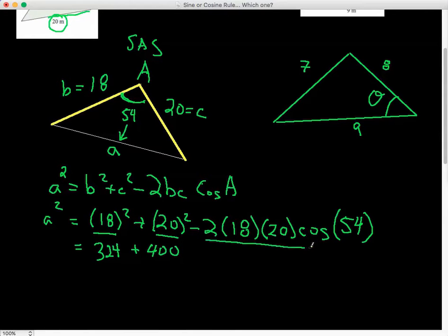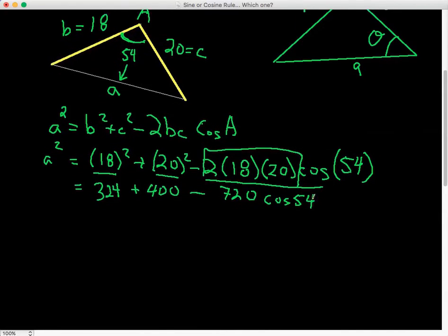And this you can all multiply here together, these numbers in front. So it's going to be minus 2 times 18, which is 36, times 20 is 720 cos of 54. So I don't evaluate cos of 54 yet. And now the next step I would do to make sure I don't make any mistakes is I would add these two together.